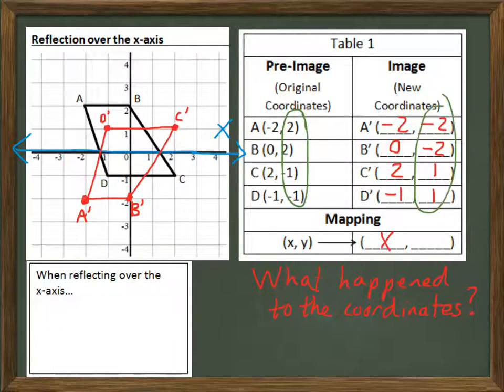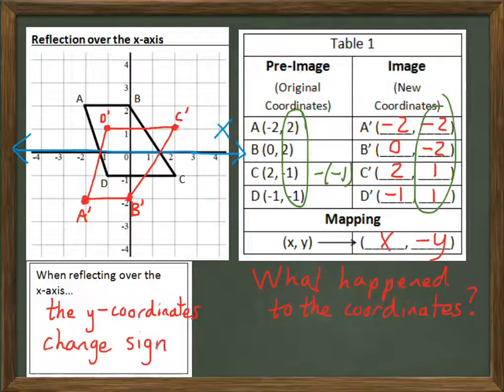But what happened to the y's? Notice that a y coordinate of two changed into negative two on both A and B. And negative one changed to positive one on C and D. So we can write that as negative y. Because, even in the case of the negative one, a negative negative one is positive. So, two became negative two and negative one became positive one. In other words, the y coordinates changed sign.